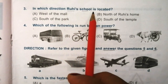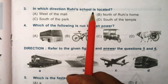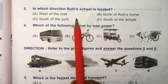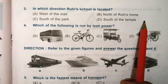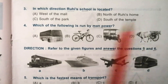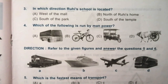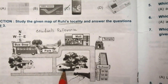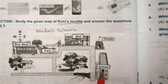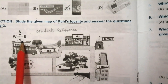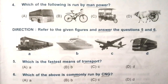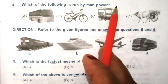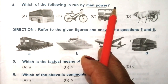Question 3: in which direction is Rookie's school located? Options are: west of the mall, north of Rookie's home, south of the park, south of the temple. The answer is D — south of the temple. Look at the given picture: the school is located to the south of the temple.